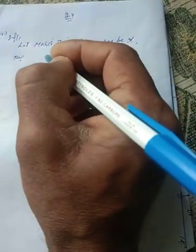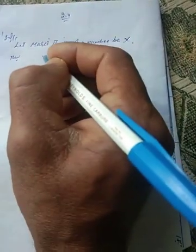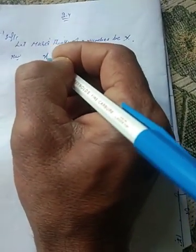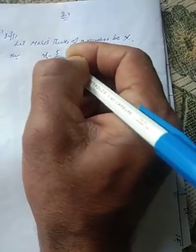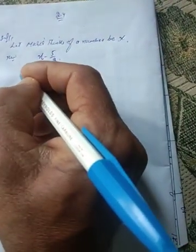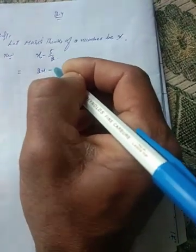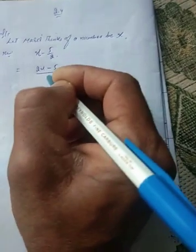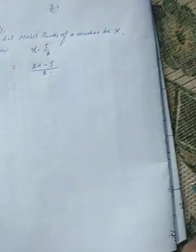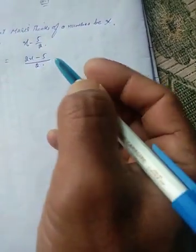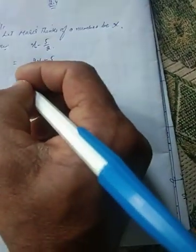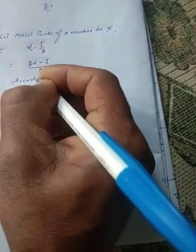Then she will subtract 5/2 from x, so x minus 5/2. This becomes (2x minus 5) divided by 2. According to the question...